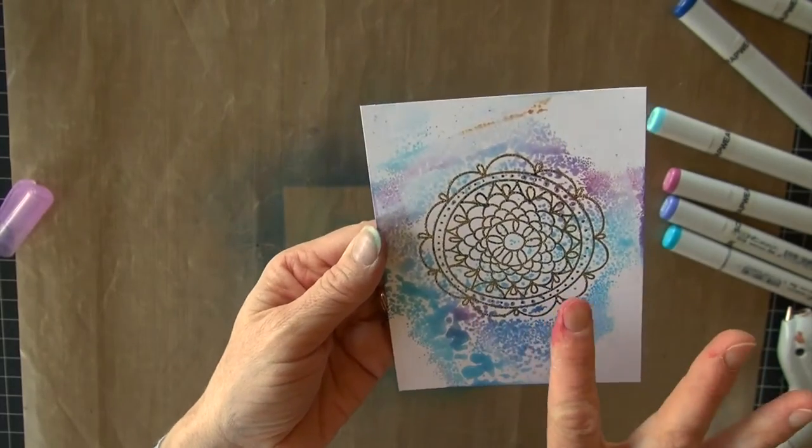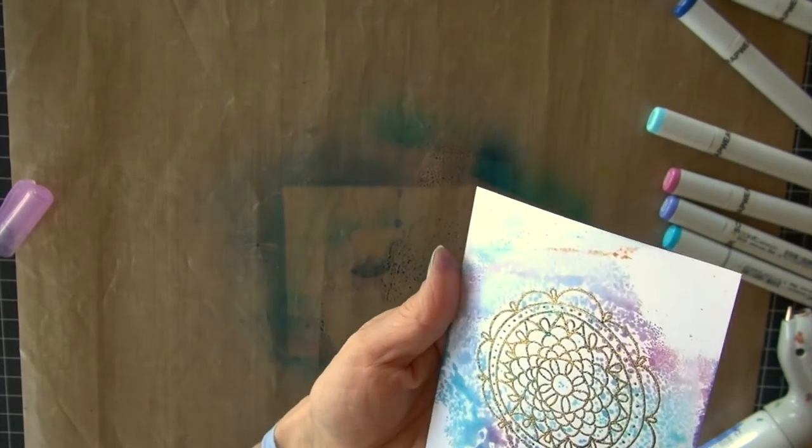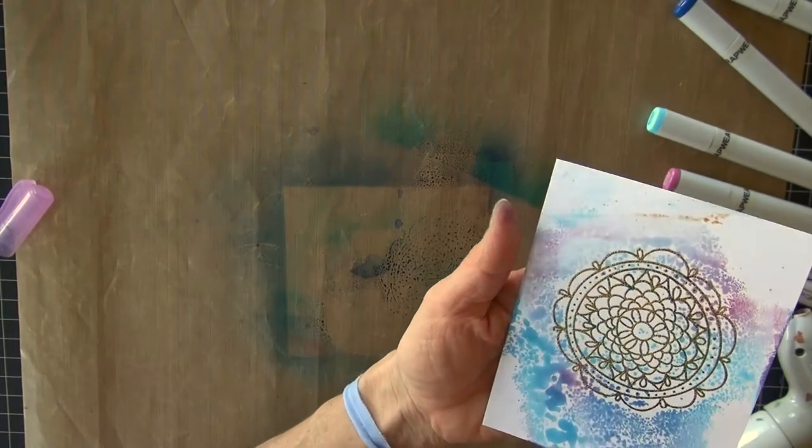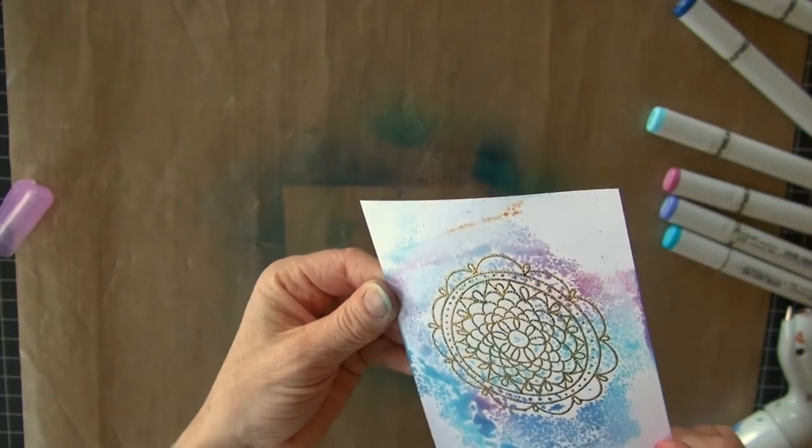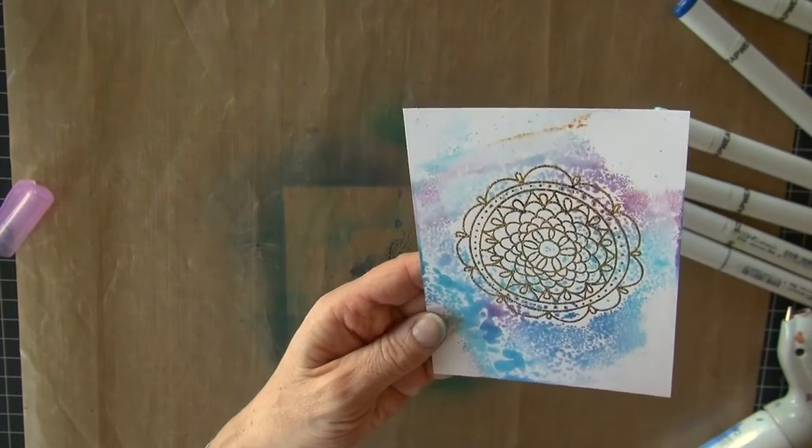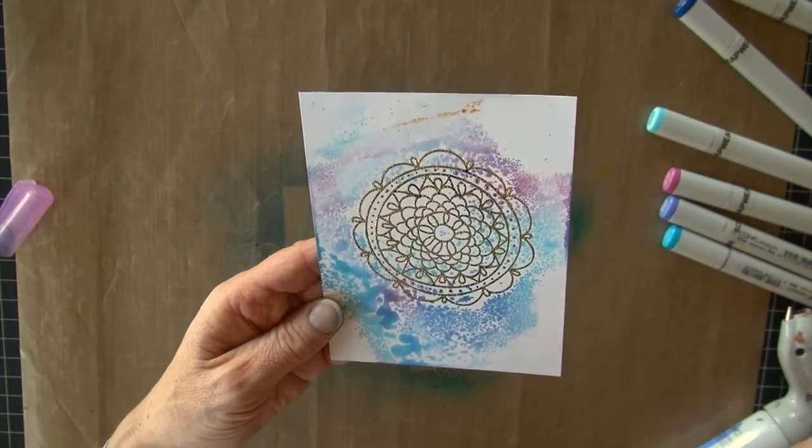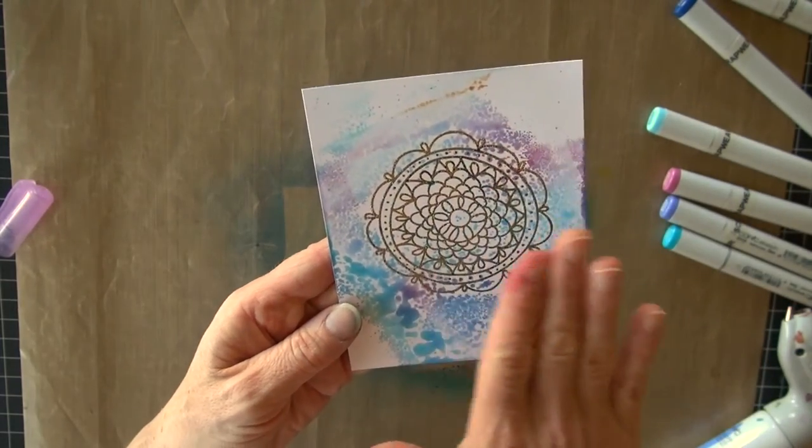And you get this kind of neat speckled, but beautiful background. Now this is a gold embossing. I've got a little bit of ink. In fact, I got quite a bit of ink right on the embossing powder. And so it has changed the look of that. I'm kind of liking it on this one, but I could do the exact same thing. I could come back with that damp paper towel and clean off the gold embossing.